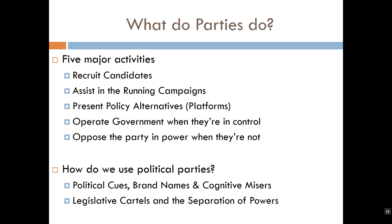Based on which set of positions you find more appealing, you can choose which party to support. If you like the Democratic platform, you can vote Democrat; if you like the Republican platform, you can vote Republican, and you know more or less what you're going to get. We can use these party platforms to identify the policy alternatives we're being asked to choose from during election season.